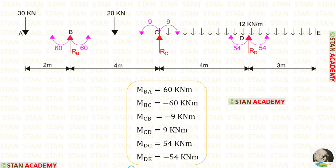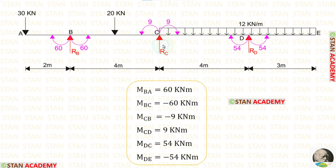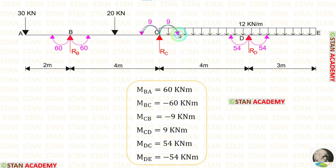We have now calculated all the moments. MCB is negative, meaning it is acting in the anticlockwise direction. MCD is positive, meaning it is acting in the clockwise direction. Initially we assumed MCB would be clockwise and MCD anticlockwise, but our assumption was wrong: MCB is anticlockwise and MCD is clockwise.